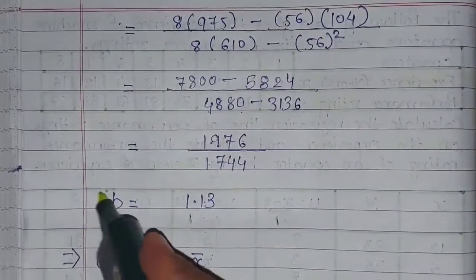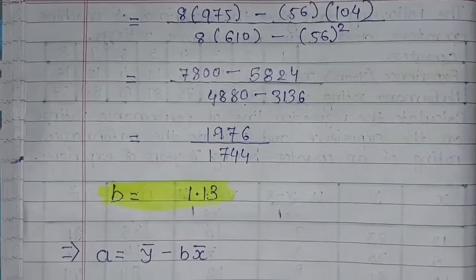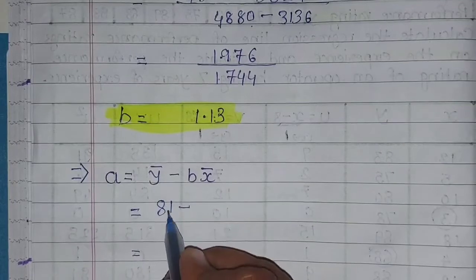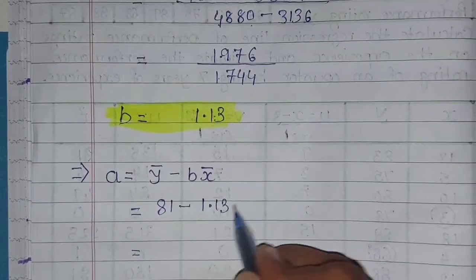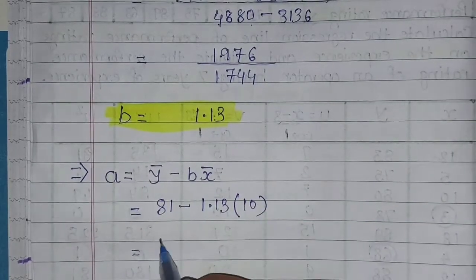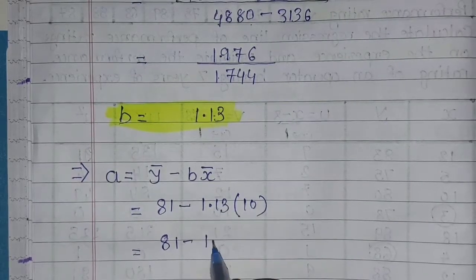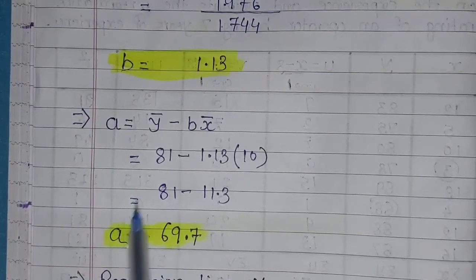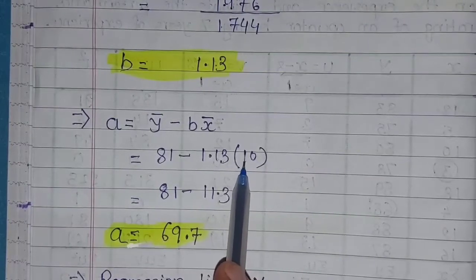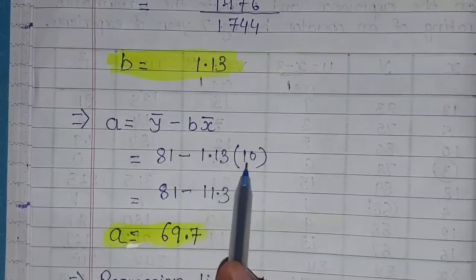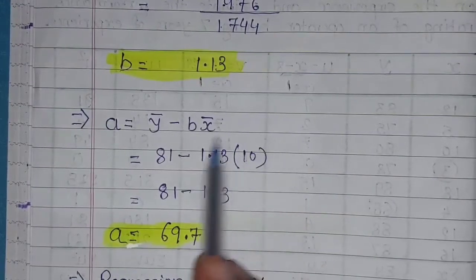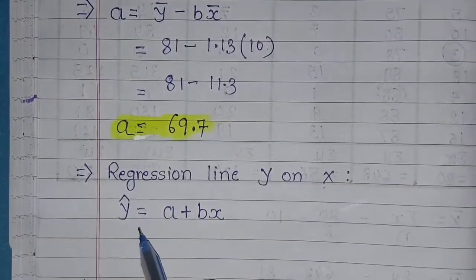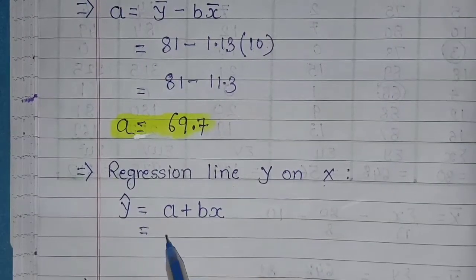So the value of b is 1.13. For our third step, we find a equals y-bar minus b times x-bar. The value of y-bar found in step 1 was 81, the value of b is 1.13, and x-bar was 10. So a equals 81 minus 1.13 multiplied by 10, which is 81 minus 11.3, giving a equals 69.7. Remember: many students make the mistake of doing 81 minus 1.13 first and then multiplying — that is wrong. You must first multiply b and x-bar, then subtract from y-bar.